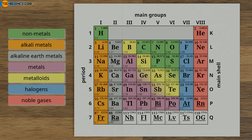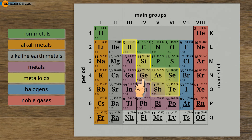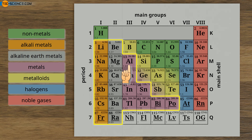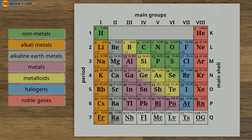Besides the noble gases and halogens, the elements hydrogen, carbon, nitrogen, phosphorus, oxygen, and sulfur belong to the classical non-metals. They are not assigned to a special main group but are distributed over the 1st and 4th to 6th main groups. The transition to the already mentioned semi-metals — boron, silicon, germanium, arsenic, antimony, selenium, and tellurium — is smooth. The transition to the remaining metals of the main group elements — aluminum, gallium, indium, thallium, tin, lead, bismuth, and polonium — is also smooth. These elements range from the 3rd to the 6th group.